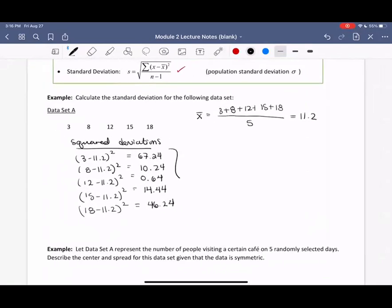We can add these up. Pause the video to add them up for yourself. We should be getting around 138.8. So this is our variance, which is our standard deviation squared.